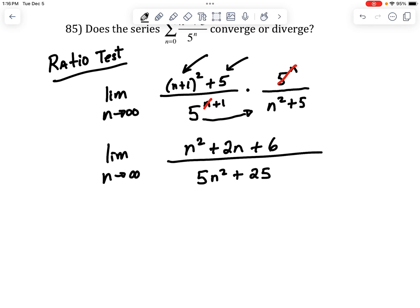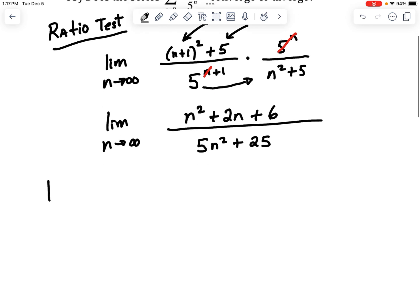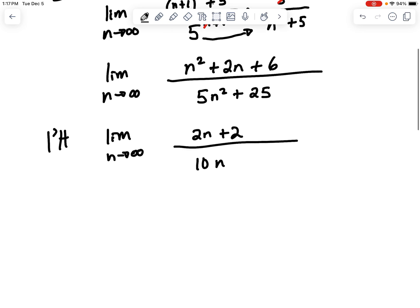And then the limit as n goes to infinity. So on top, there's infinity. On bottom, there's infinity. So you could use L'Hopital's rule. Such a time saver. Good old L'Hopital. So on the top, the derivative is 2n plus 2. On the bottom, it's 10n plus 0, or just 10n. And this would still be infinity over infinity. So use L'Hopital's rule one more time.